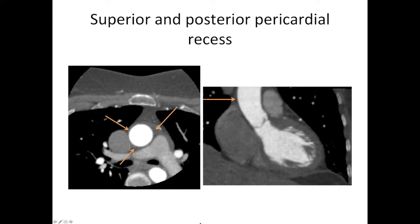The superior pericardial recess we can split into anterior and right components. This first arrow here is the anterior superior pericardial recess. Over here we have the right superior pericardial recess, and back here we have the posterior pericardial recess. On this image, there's just a little structure in here — now this isn't the superior vena cava, this is the right superior pericardial recess. You can tell it's actually separated from the heart, and that this is the atrium that's separate to it, rather than if it were the superior vena cava, it would be connected.